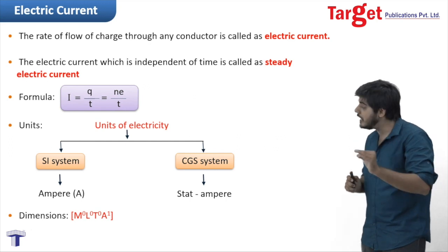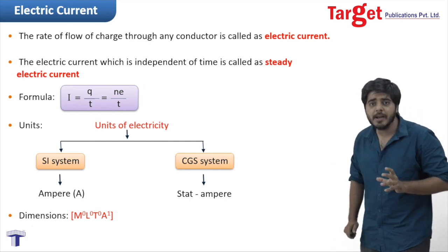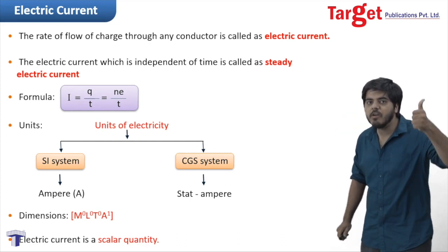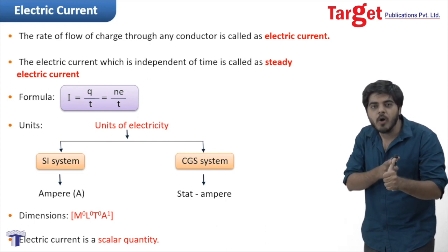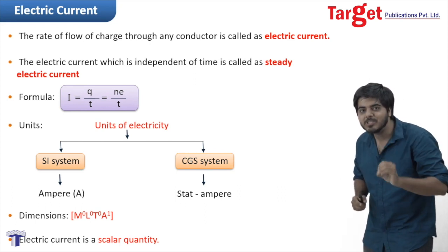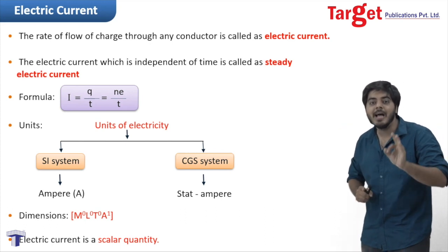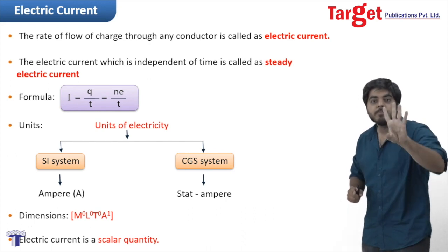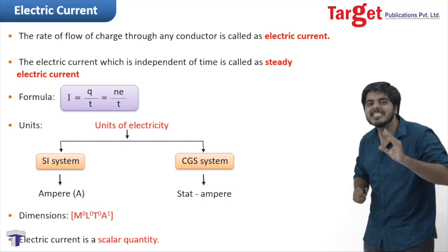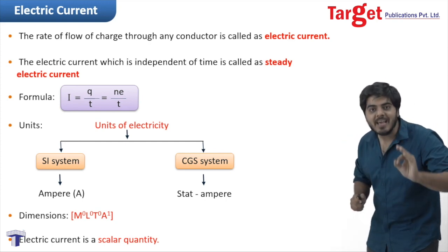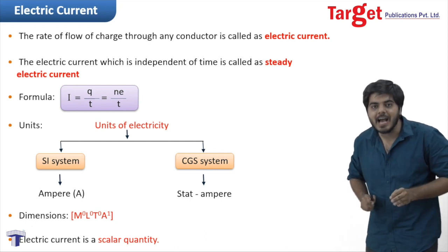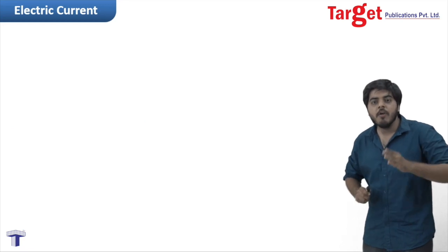The dimension of electric current is M⁰L⁰T⁰A¹. From the entire learning, we conclude that current is a scalar quantity. To summarize: electric current is the rate of flow of charge through a conductor; steady current is independent of time; formulas are I = Q/T and I = ne/T; SI unit is ampere, CGS unit is stat ampere; dimension is M⁰L⁰T⁰A¹; and current is a scalar quantity.